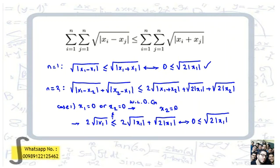We check when n equals 2. We have the square root of the absolute value of x1 minus x2, and the terms x2 minus x1. The terms x1 minus x1 and x2 minus x2 are both zero, so we ignore them. We want to prove this is less than or equal to the square root of the absolute value of x1 plus x2 plus 2 times the absolute value of x1 plus 2 times the absolute value of x2, all inside the radical.